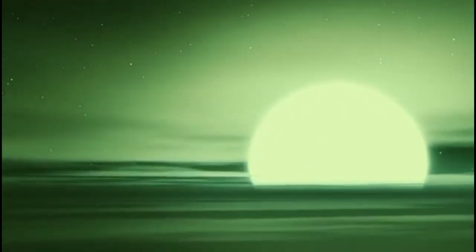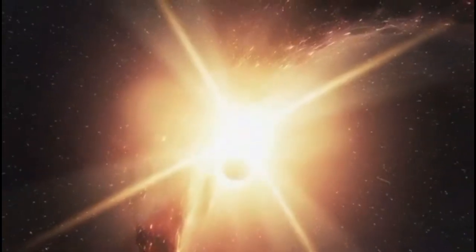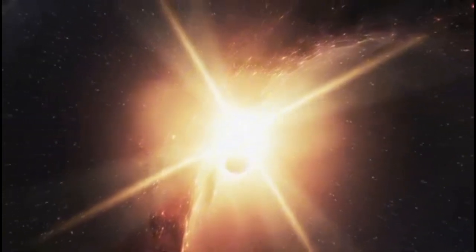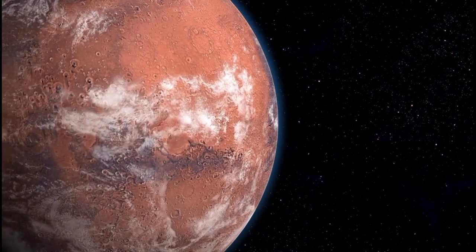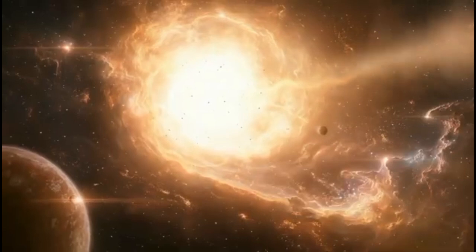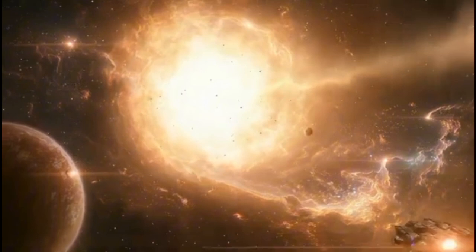However, the faintness of Betelgeuse's light is not solely attributable to the distance that separates us from it. Betelgeuse is what is known as a pulsating red supergiant, which means it is an ancient, massive star that undergoes expansions and contractions. During these cycles, its brightness can vary in the night sky, becoming more intense or dimmer over time.